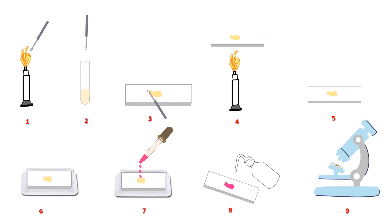Fifth step, let it cool down for a bit. Next step, place it over a staining tray. Next step, cover the entire thin film with the stain and wait for a minute. Next step, using a wash bottle, wash off the excess stain and gently dry it with blotting paper. Last step, with the help of immersion oil, observe this slide under a microscope.